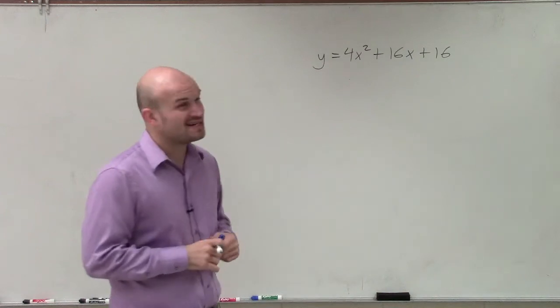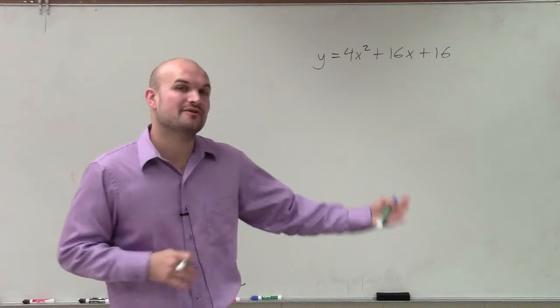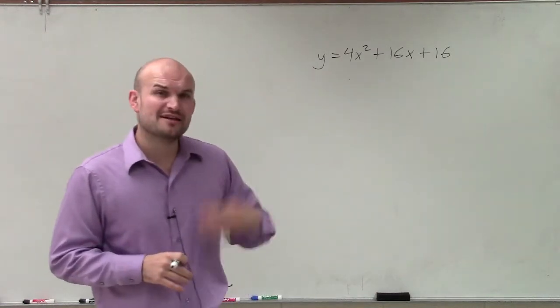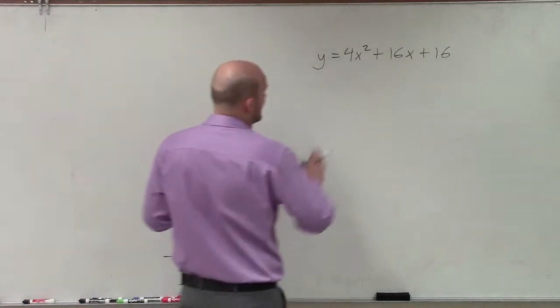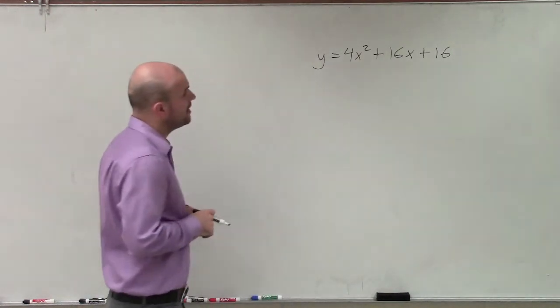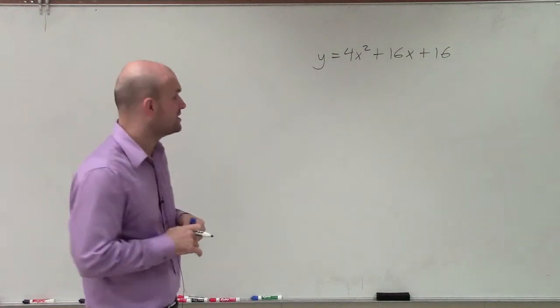But what I kind of notice is I think this might be a perfect square trinomial. Obviously, that's the part of the course. So before I even go and factor out the 4 and use another factoring technique, I might want to look at this and say, could I actually possibly factor this out using my perfect square trinomial?